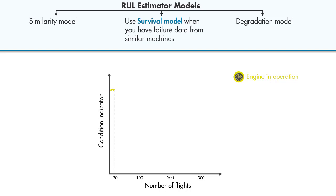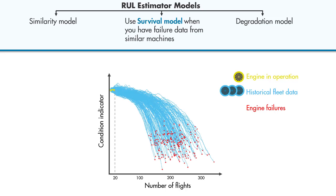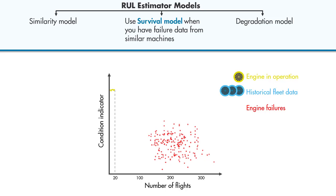This is data from a fleet with the same type of engine. If we don't have the complete histories from the fleet but have only the failure data, then we can use survival models to estimate RUL. We know how many engines failed after how many flights.